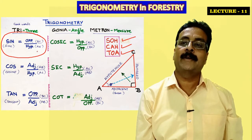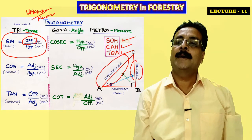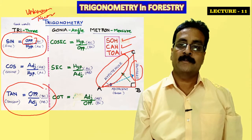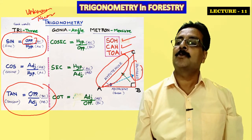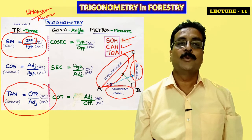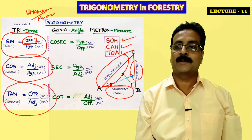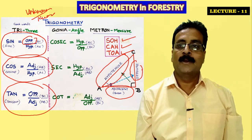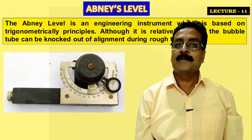Tangent is used for right angle triangles: opposite over adjacent, where the opposite (height) is unknown and the adjacent (horizontal distance) is known. In coming lectures we'll understand SOH-CAH-TOA and where to apply each. I also need to tell you about the instruments we will use to take degree readings.